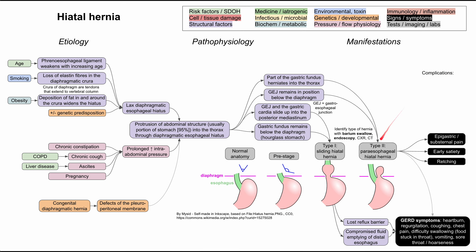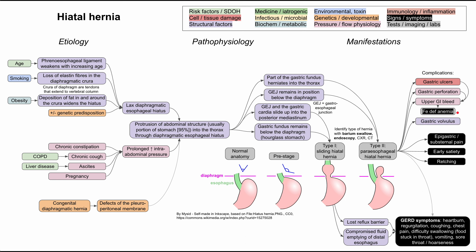There are some complications worth knowing with type 2. It can cause gastric ulcers and gastric perforation, both of which can lead to an upper GI bleed — either a sudden bleed or a more surreptitious slow bleed over time. This can lead to iron deficiency anemia, presenting with anemia symptoms and abnormal labs. There's also gastric volvulus, where the stomach twists on itself, which can also occur with type 2 paraesophageal hiatal hernia.